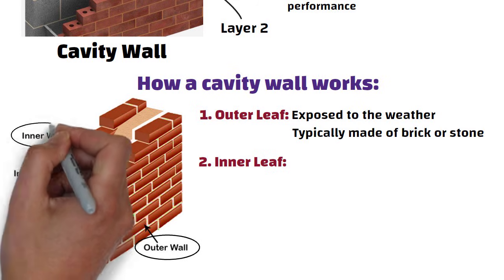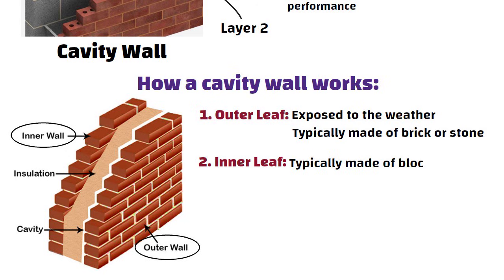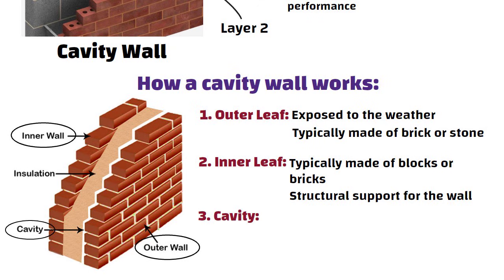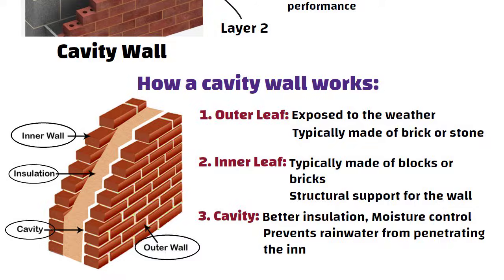Inner leaf: The inner layer is typically made of blocks or bricks, providing the structural support for the wall. Cavity: The space between the two leaves helps with better insulation, moisture control, and prevents rainwater from penetrating the inner leaf.